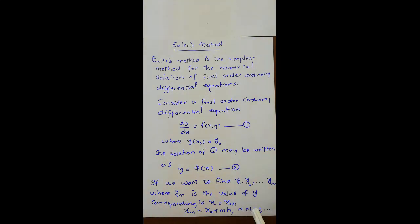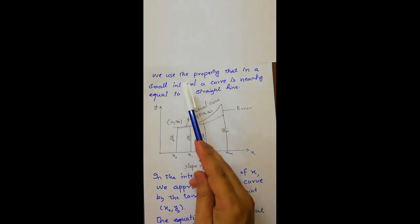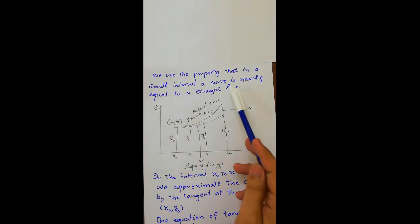Where m equals 1, 2, 3, and so on. We use the property that in a small interval, a curve is nearly equal to a straight line.